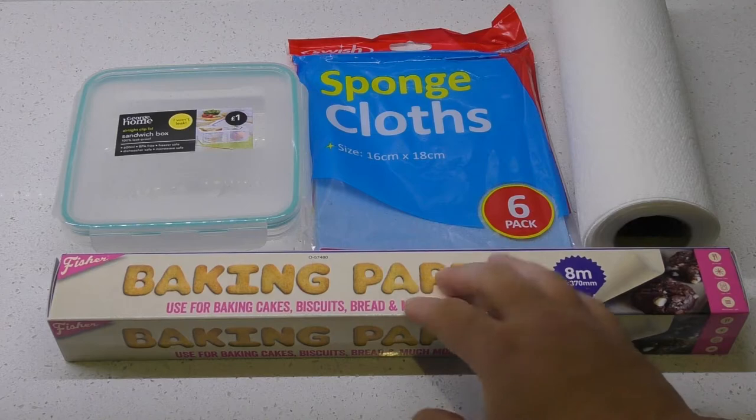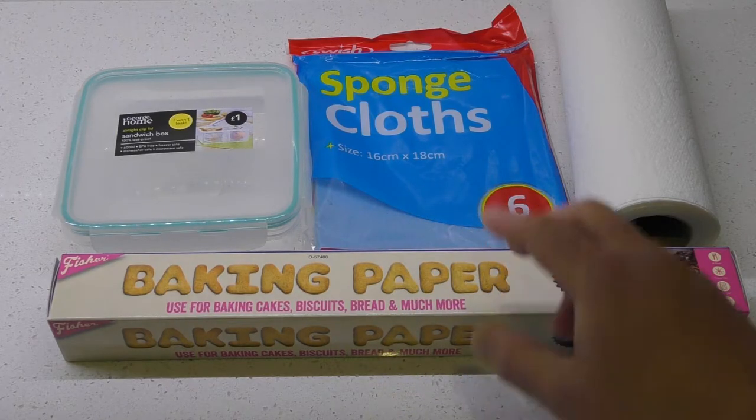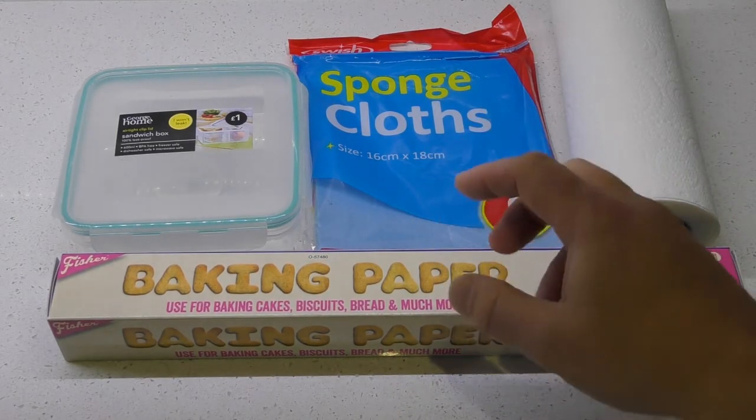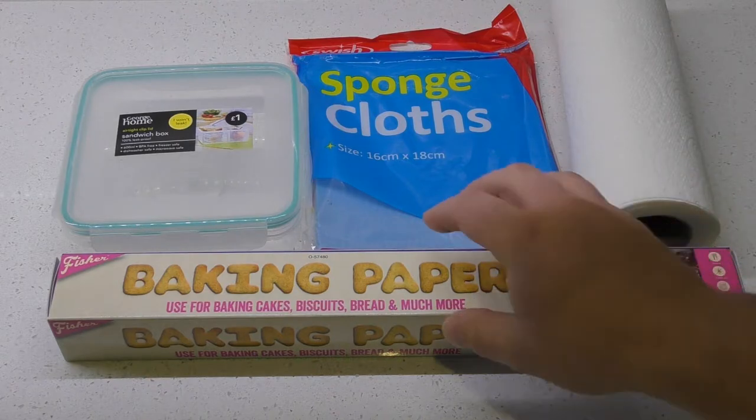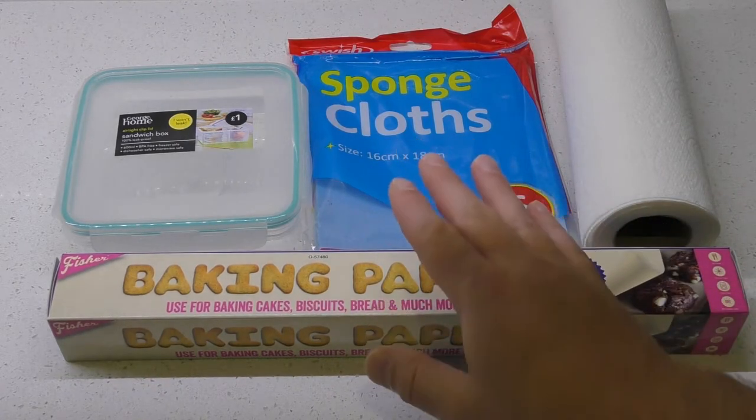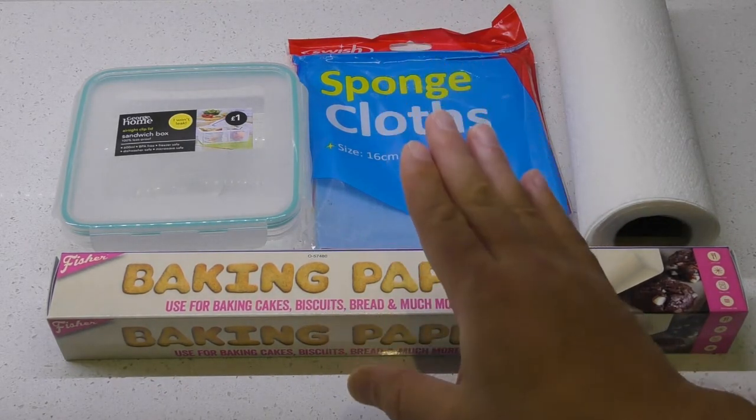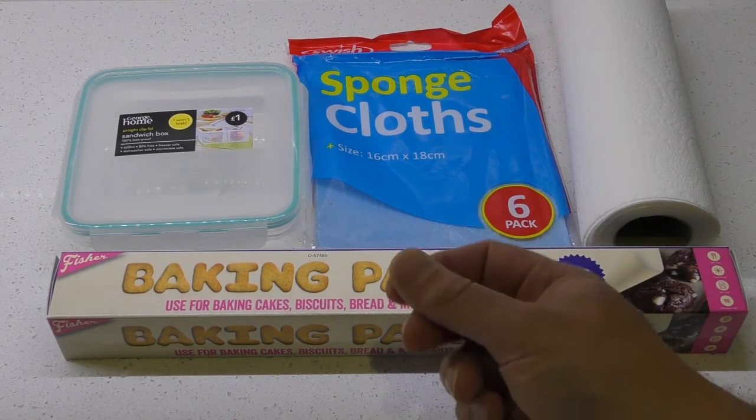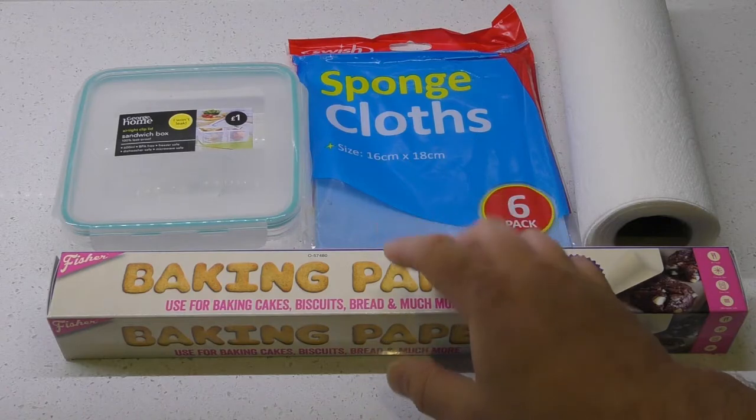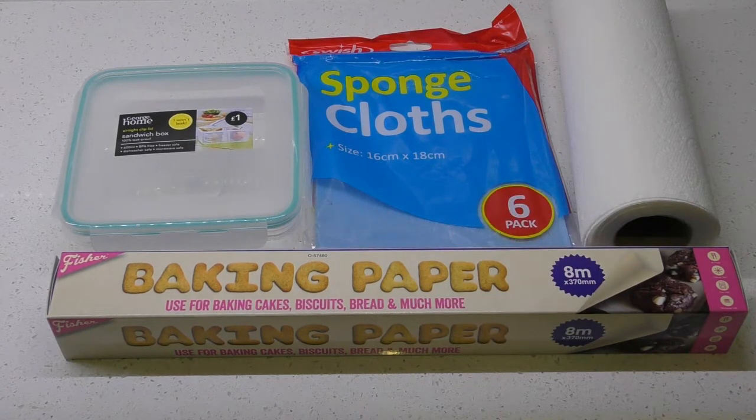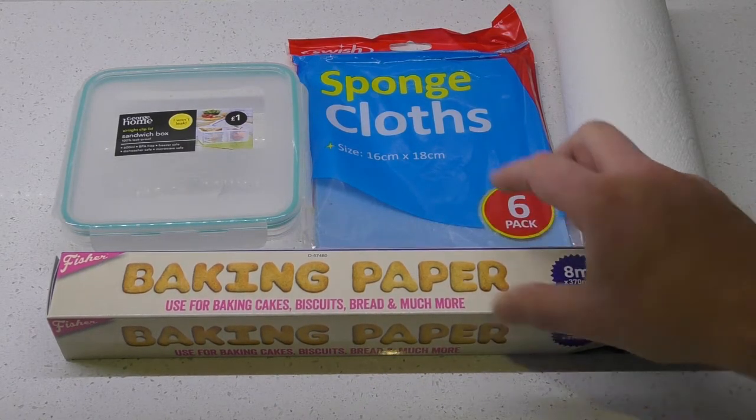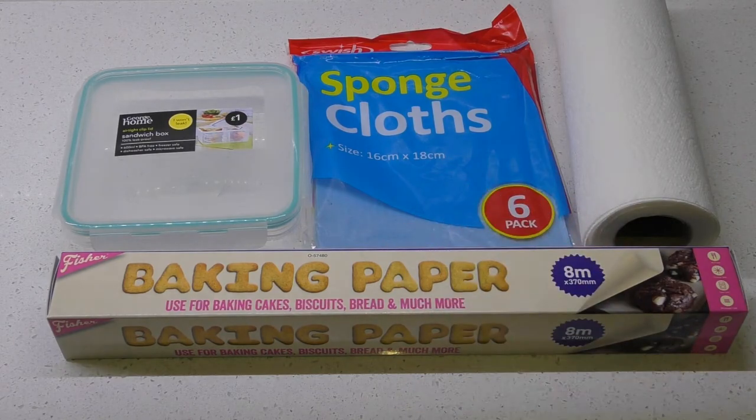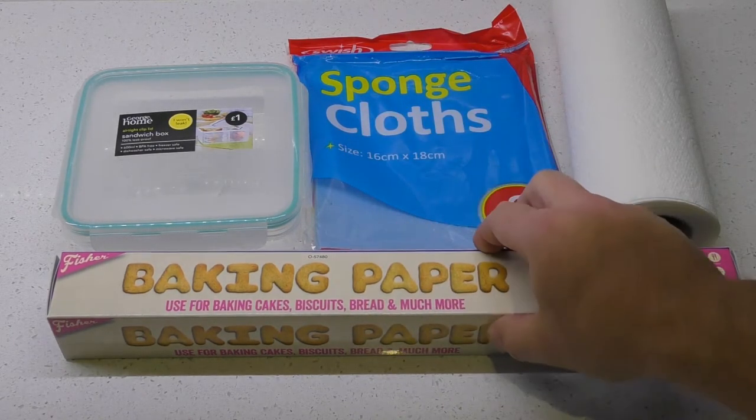You also need some baking paper or parchment paper. Be careful which one you buy because some have a wax coating which makes them not very useful for what we want. Some are even foil backed. Make sure it's not the waxy coated one and not the foil coated one. If you can find parchment paper it definitely won't be wax coated. This is from a pound shop, one pound.